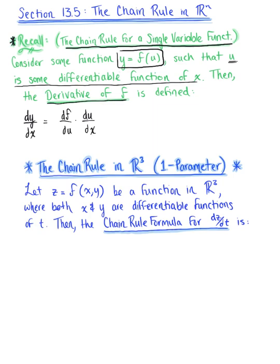Alternatively, we could use prime notation to denote the chain rule — the derivative of f with respect to u multiplied by the derivative of u with respect to x. A similar extension is used to define the chain rule in Rn.